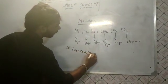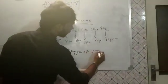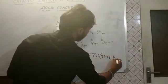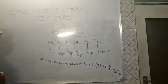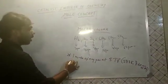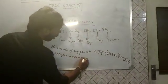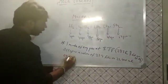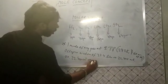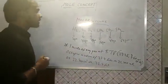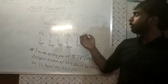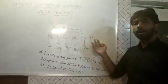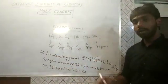STP stands for Standard Temperature and Pressure: standard temperature is 273 Kelvin and standard pressure is 760 mm of Hg. So 1 mole of any gas at STP occupies 22.4 liters (or 22,400 mL or 22,400 cm³ or 22.4 dm³). This means 2 g H2, 32 g O2, 71 g Cl2, 16 g CH4, 44 g CO2, and 64 g SO2 all occupy 22.4 liters at STP.